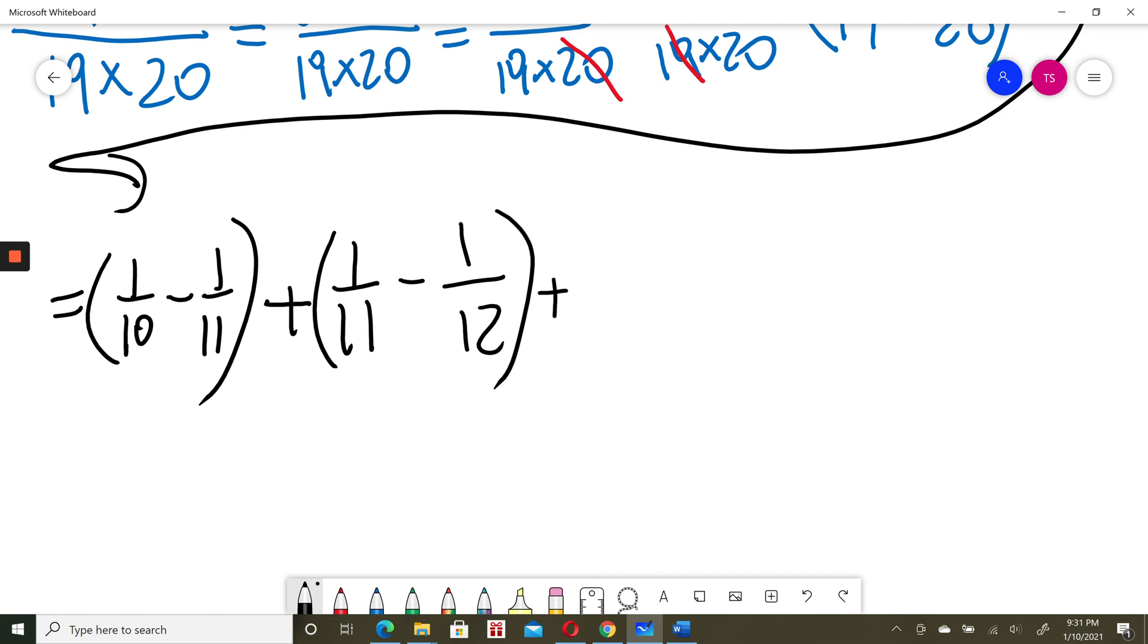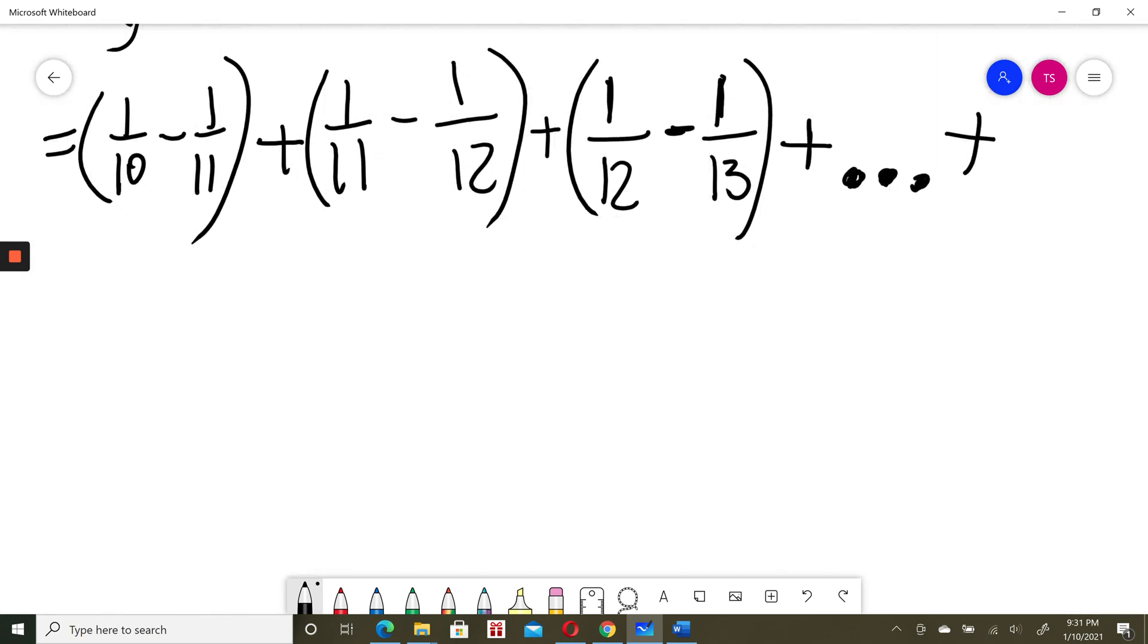If I wanted to write the next term, I could do it, but I can just assume this is 1 over 12 minus 1 over 13. I would be doing the same thing all the time, until, not the last one. I would just write before the last one. Before last one, I would just have 1 over 18 minus 1 over 19. And the last term would be 1 over 19 minus 1 over 20.